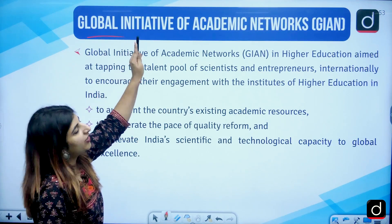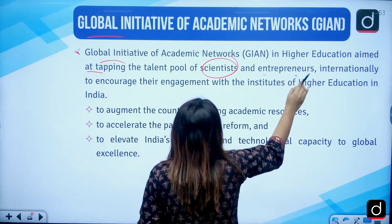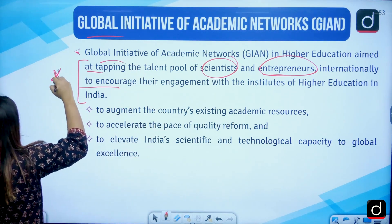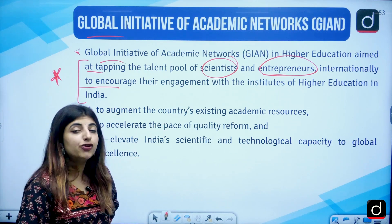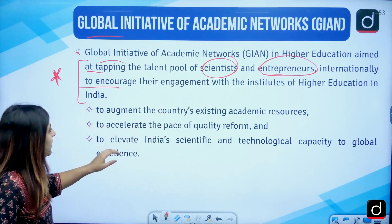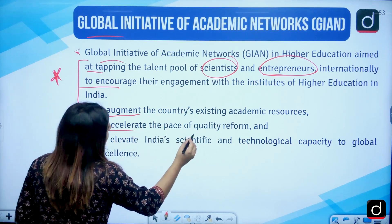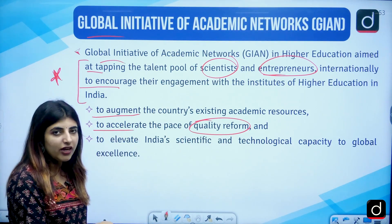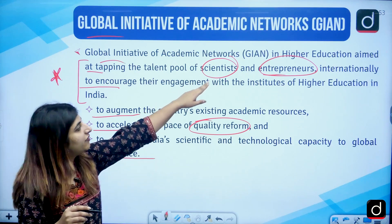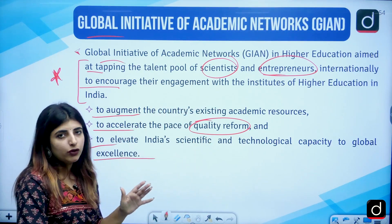Next is GIAN — Global Initiative of Academic Networks. It is aimed at tapping the talent pool of scientists and entrepreneurs internationally to encourage their engagement with institutions of higher education in India. This line has been asked in the NET examination. The portal facilitates collaboration with international scientists and entrepreneurs to augment existing academic resources, accelerate quality reforms, and elevate India's scientific and technological capacity to global excellence.